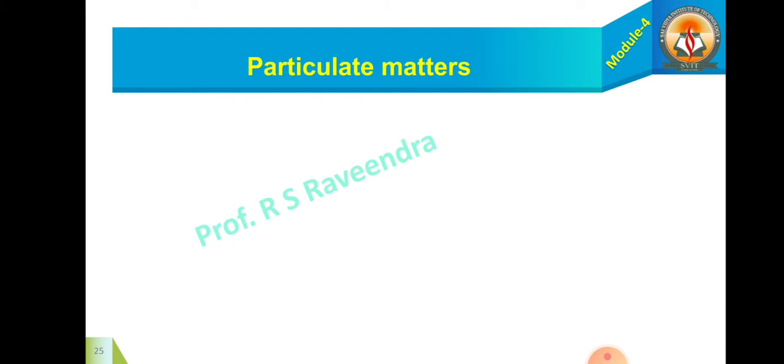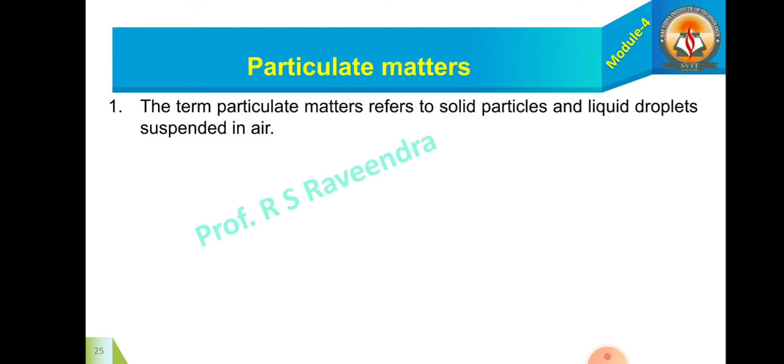Now the next primary air pollutant we have is particulate matters. What are these particulate matters? Where are they found? How these particulate matters will enter into the atmosphere and how they cause damage to the plants, animals, and human beings? Now let's go one by one. The term particulate matters refers to the solid particles and liquid droplets suspended in the air.